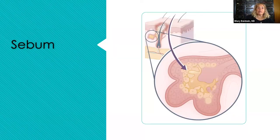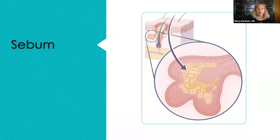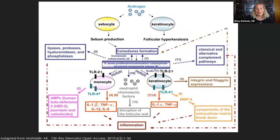Let's start with sebum. We see here a sebaceous gland with holocrine secretion of sebum — the sebocytes actually break down in the process of bursting open and liberating their sebum. This is a very complicated slide, though it's only the tip of the iceberg — it's even more complicated than this. Under the influence of androgens, we see an increase in sebum production and follicular hyperkeratosis, affecting both sebocytes and keratinocytes, which leads to the microcomedo, colonized with C. acnes, and then all heck breaks loose with the inflammatory process.